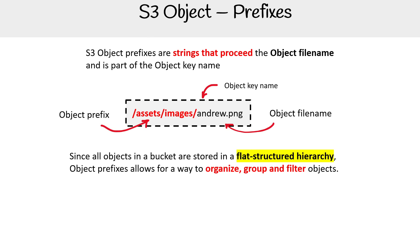Since all objects in a bucket are stored in a flat structured hierarchy, object prefixes allow for a way to organize, group, and filter objects. So this is the way we get folders, and we talked about folders in another slide.